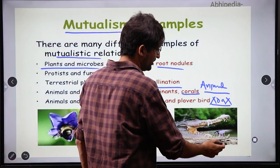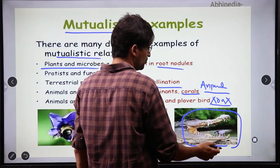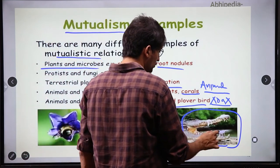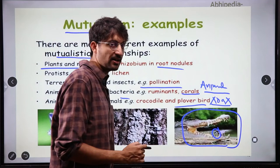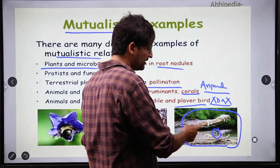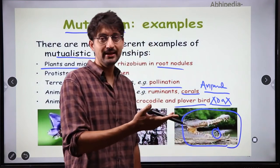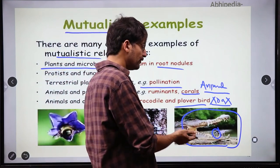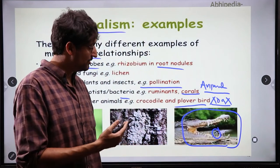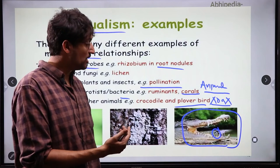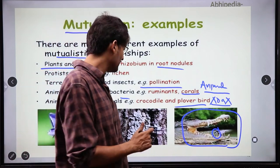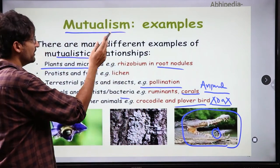Another very interesting example is the crocodile and plover bird. In the mouth of the crocodile, there is a very important bird called the plover bird. You must be thinking, why does the crocodile not eat this bird? Because this bird is consuming the food particles stuck in the crocodile's teeth. The crocodile benefits because its teeth are being cleaned, giving it a healthy dental structure. And the plover bird benefits by getting food. This is a symbiotic mutualistic relationship.